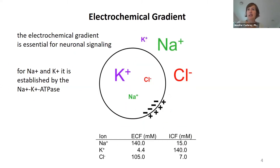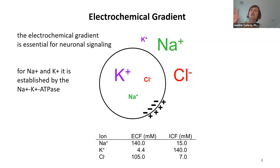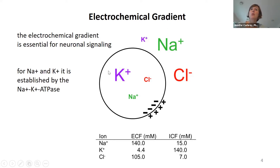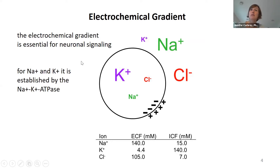The first major concept we need to talk about is the electrochemical gradient — a difference in concentration across the cell membrane in certain ions. The two we care most about today are sodium ions and potassium ions. In general, sodium is going to be really high on the outside of the cell and lower on the inside, and the opposite will be true for potassium — higher on the inside of the cell and lower on the outside. This is really important for the function of the cell.